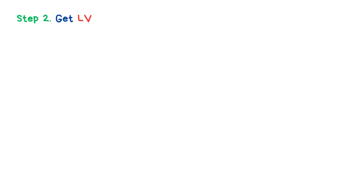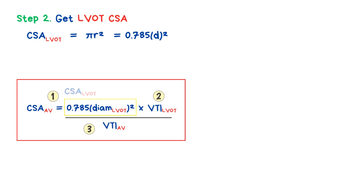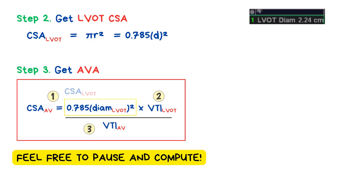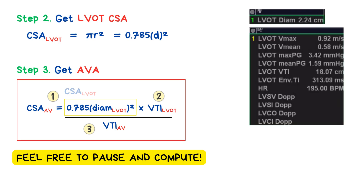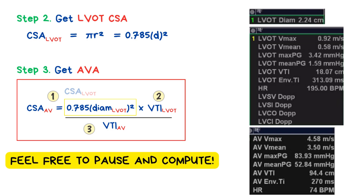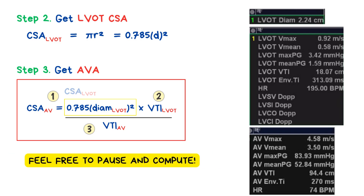Once you've acquired the necessary measurements, step two is to calculate the LVOT cross-sectional area (CSA) using the simplified formula: CSA = 0.785 × LVOT diameter². Once you have that, move to step three: compute the aortic valve area using the continuity equation — LVOT CSA × LVOT VTI, divided by the aortic valve VTI. We have a sample case on screen using LVOT diameter from the parasternal long axis view, LVOT pulsed wave Doppler from the apical 5-chamber view, and aortic valve continuous wave Doppler also from the apical 5-chamber view. Feel free to pause, review the measurements, and try plugging them into the formulas — the next slide will show the completed calculation.